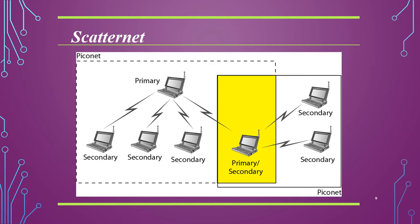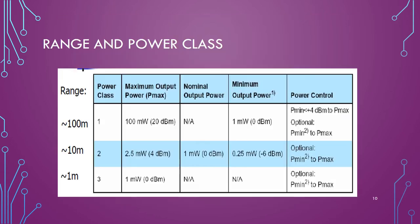Bluetooth devices are short-range radio transmitters. The current data rate is 1 Mbps with 2.4 GHz bandwidth. There is a possibility of interference between the IEEE 802.11 wireless LAN and Bluetooth LAN, so one has to be careful. Regarding range and power classes for Bluetooth, as shown in the table, the transmitter characteristics are listed by class. Range is 100 meters, 10 meters, and 1 meter respectively. Power class 1 is designed for long range — 100 meters — with a maximum output power of 20 dBm.